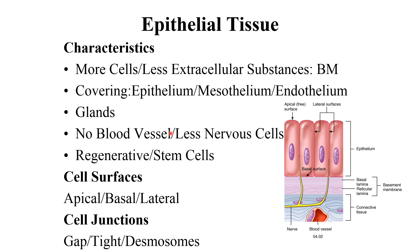Epithelial tissues are mostly dependent on the connective tissue beneath them for nourishment and gas exchange. They have a high regeneration rate compared to other tissue types — they heal and repair early. There is a continuous cycle where cells die and new cells take their place.